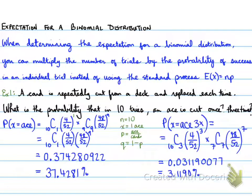Remember to keep the whole decimal. Change it to a percent and round it to four decimal places. So the probability of getting an ace three times in 10 trials is 3.1190%.